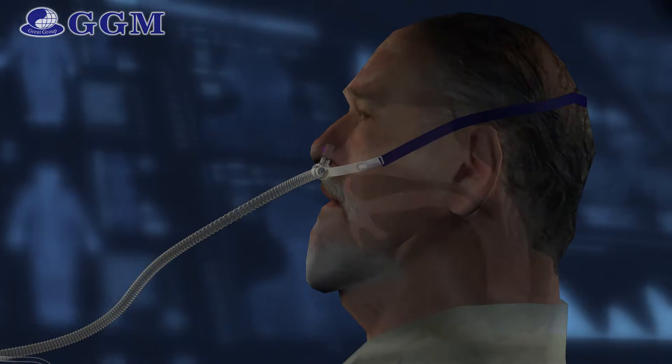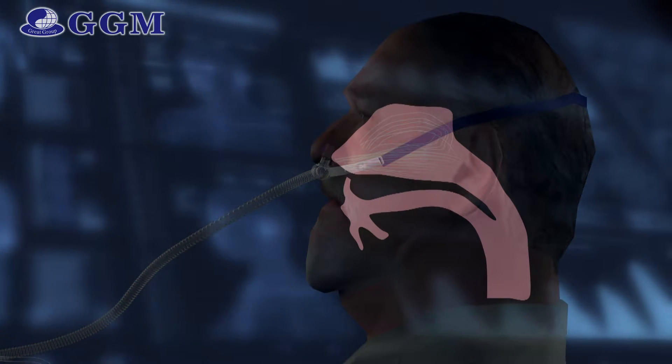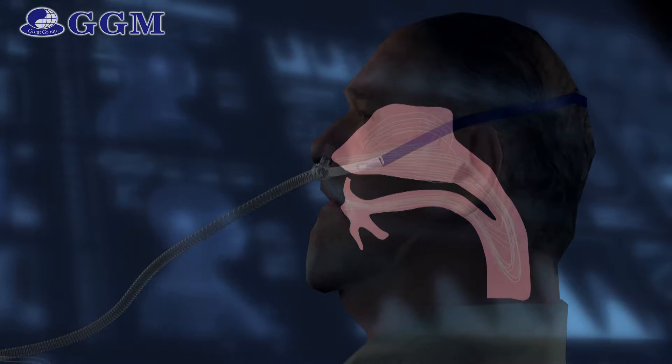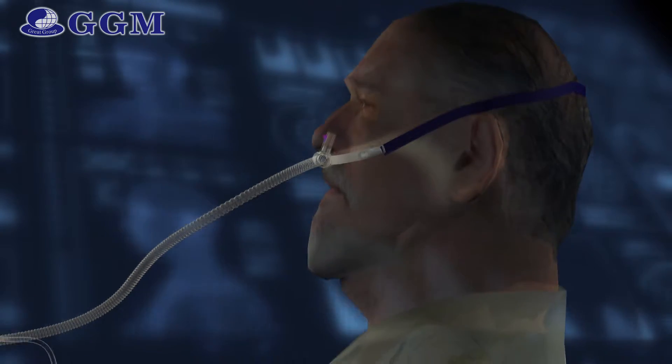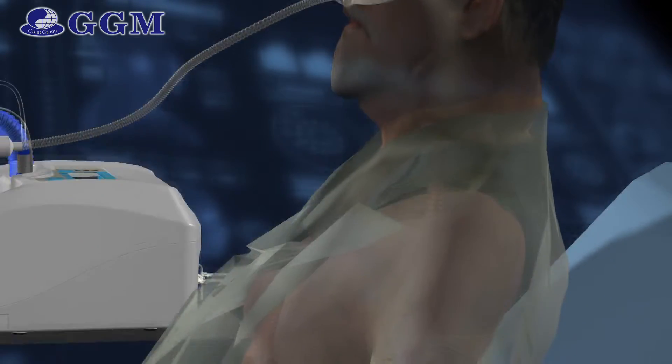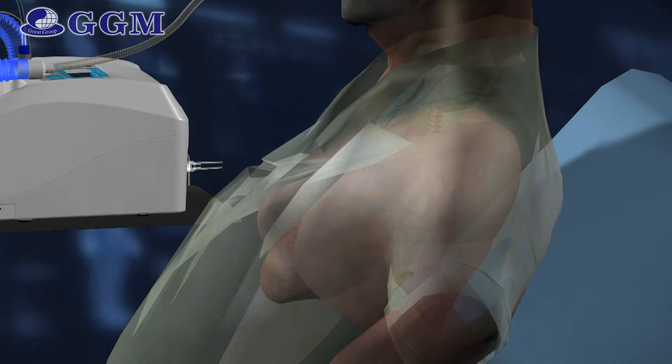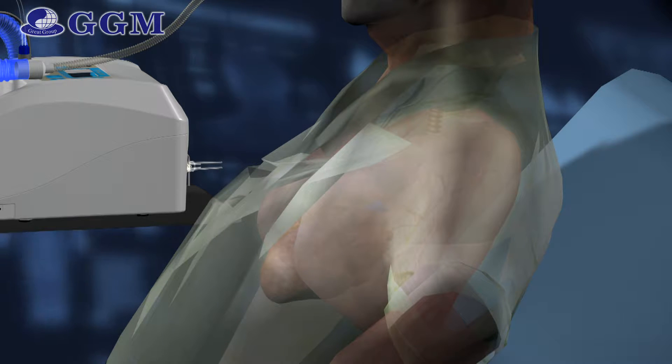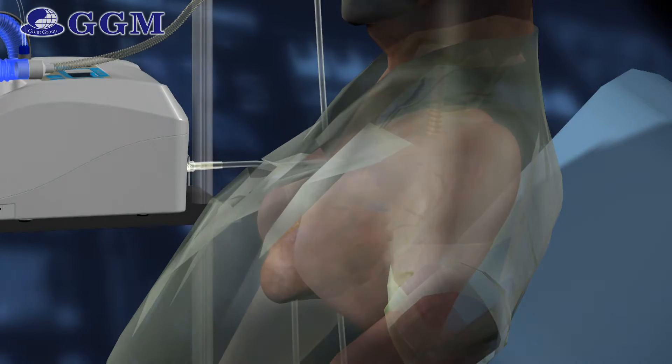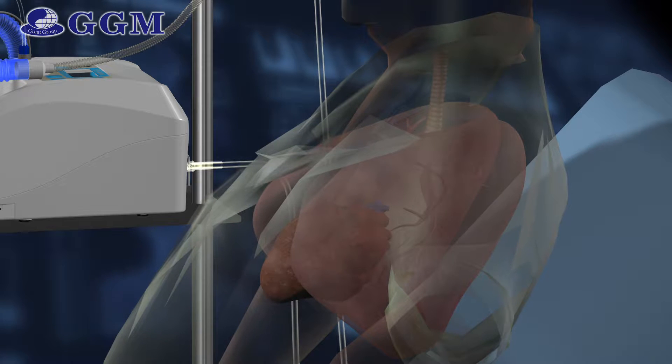The humidified flow can improve ciliary movement and accelerate sputum dilution and exclusion, thus decreasing patients' infection rate of pneumonia. Since the air and oxygen mixes before entering the flow generator, the oxygen concentration is relatively stable. Operators can also adjust the concentration of oxygen according to patients' need.